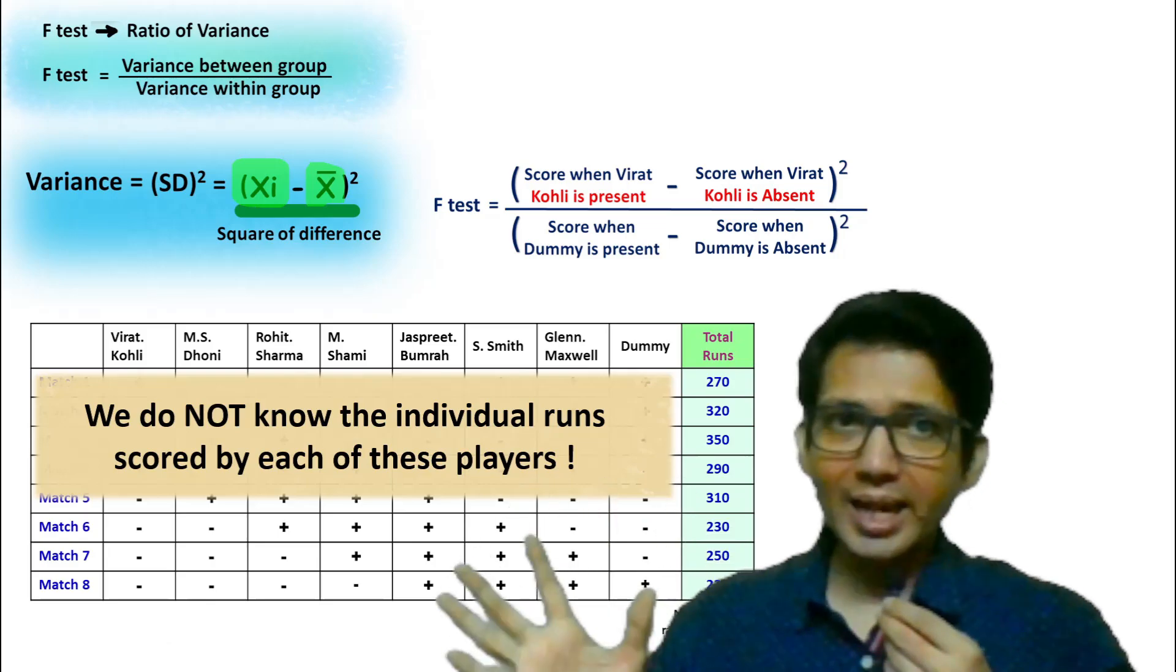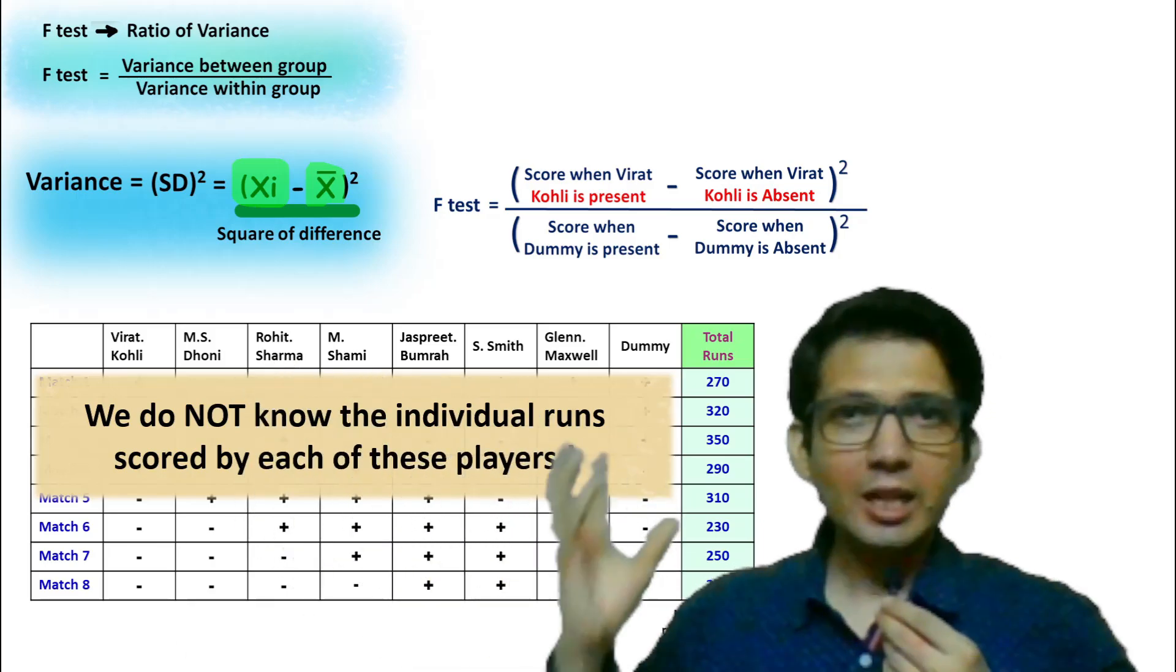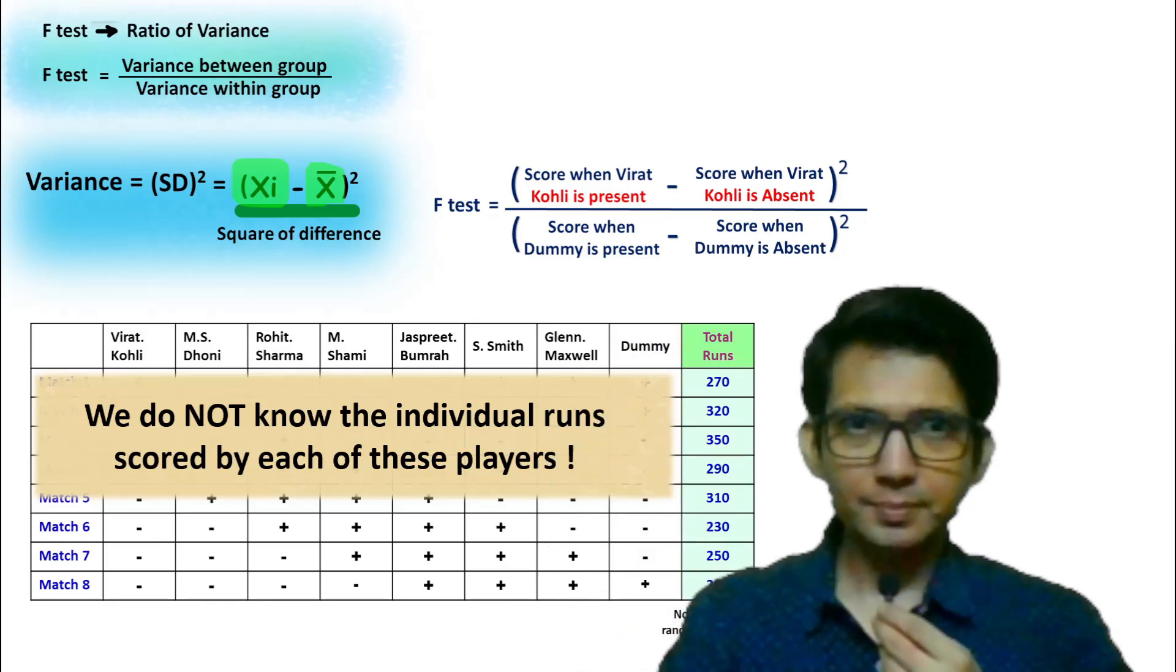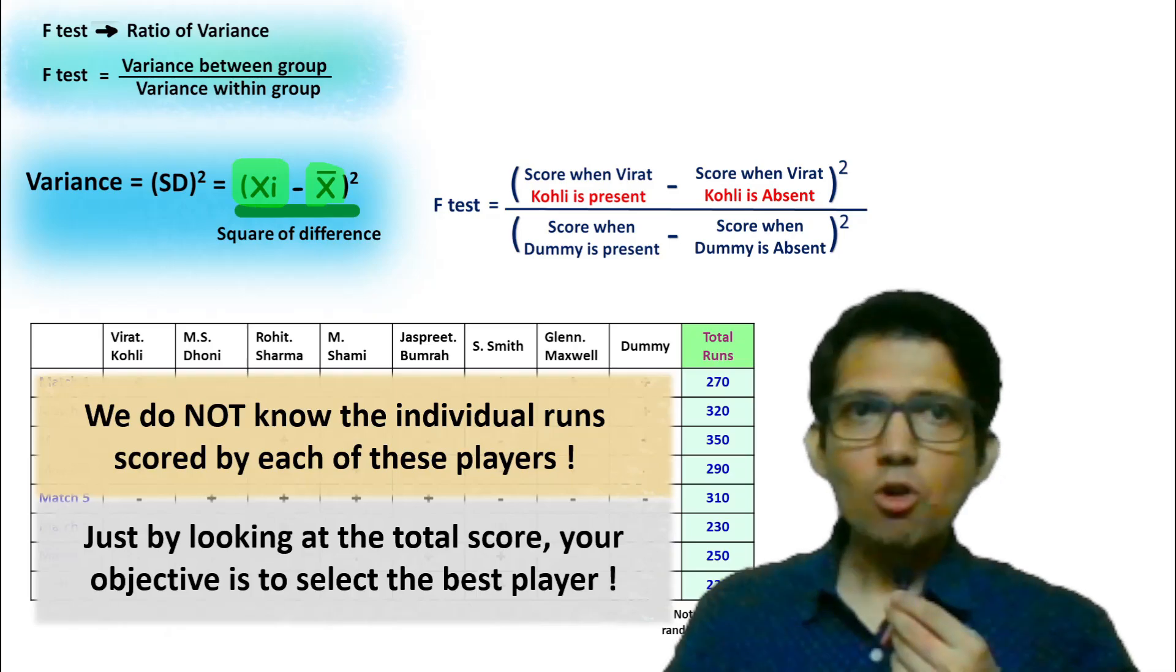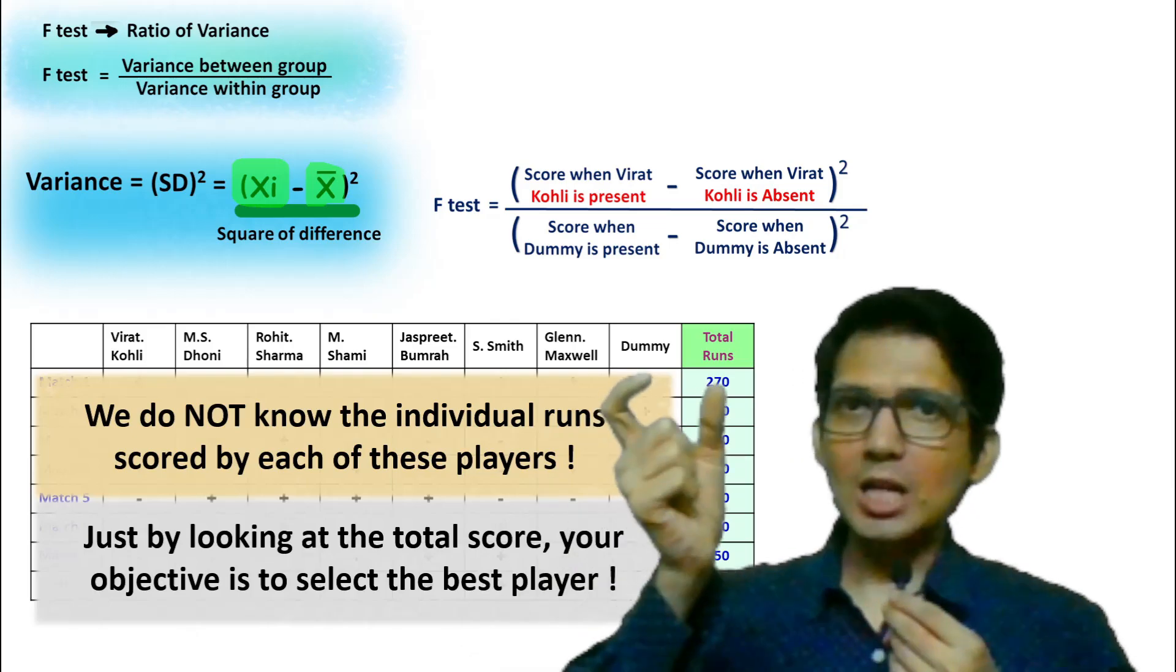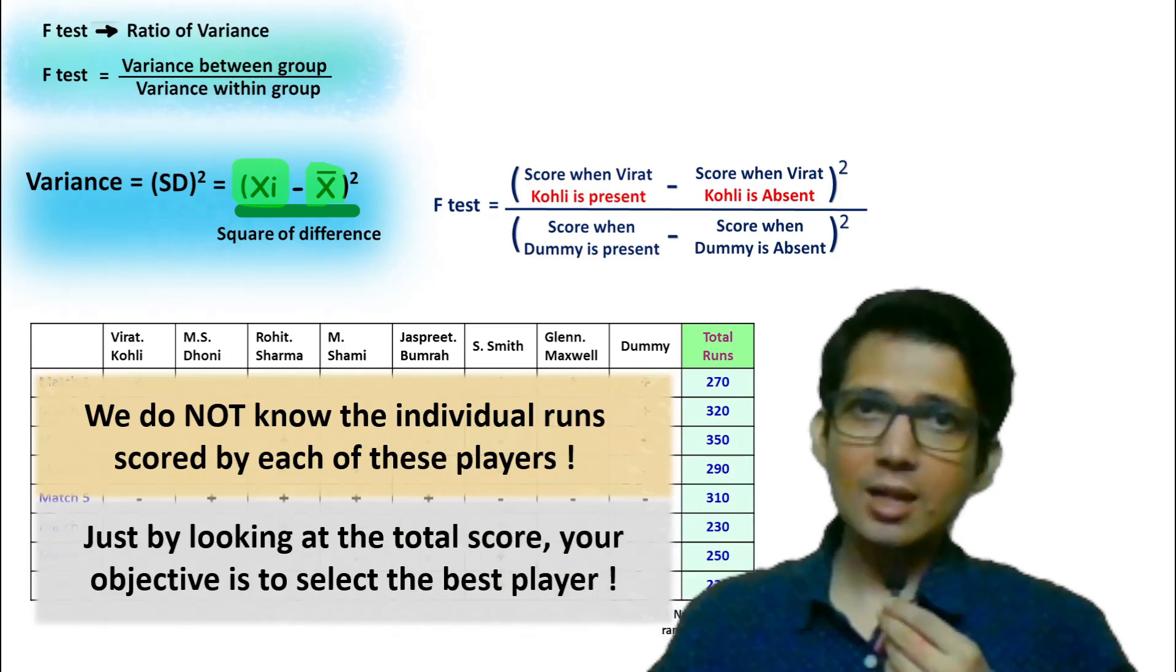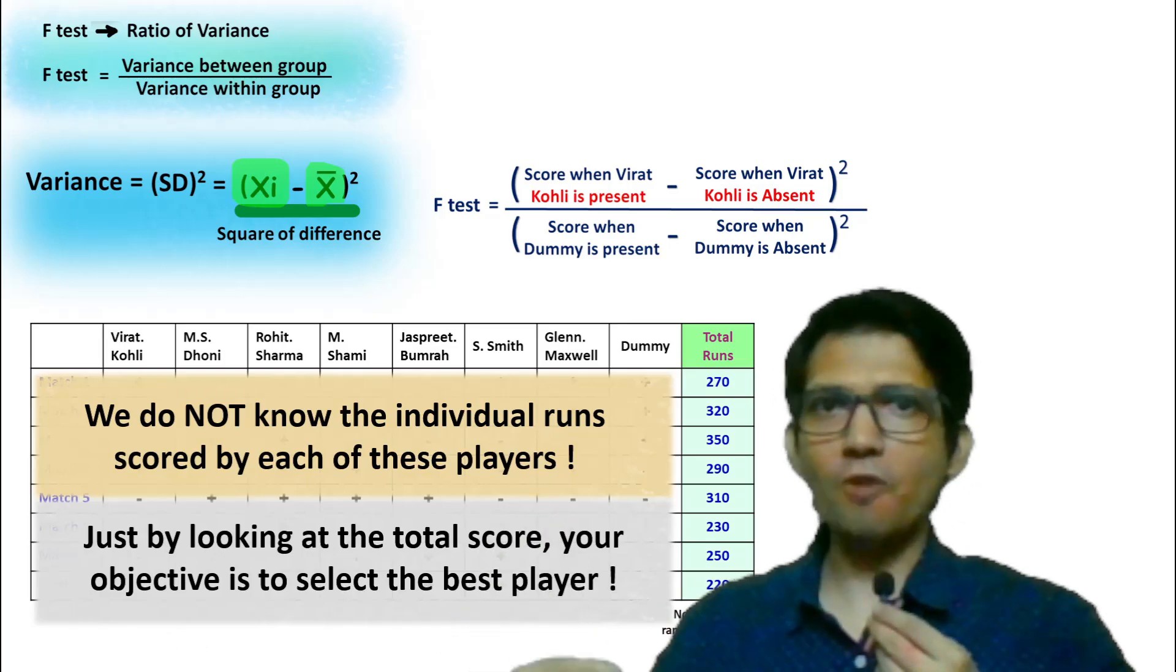Remember, in this case, we do not have any individual score of each player. The only information that we have here is the total runs scored by the team. And just by looking at the total score, your objective is to select the best player. And this is what we do in Placket-Burman analysis. By looking at the total score, you are supposed to find which player is playing well, which player is not playing well. You do not have the information about the individual score of each player.